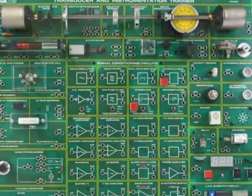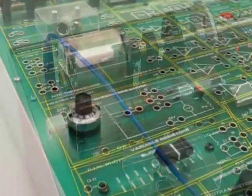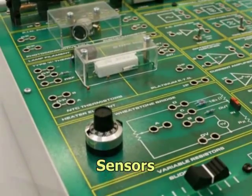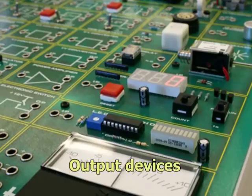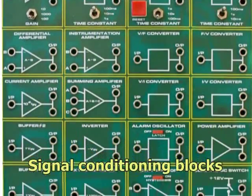The open panel access uses 4mm connection for configuring circuits from a choice of 24 sensors, 12 output devices and 21 signal conditioning circuit blocks.